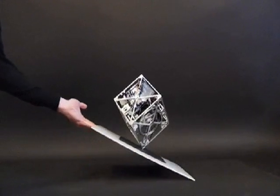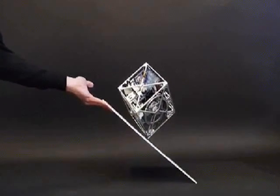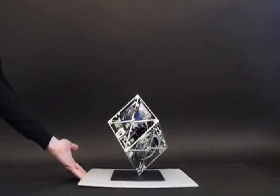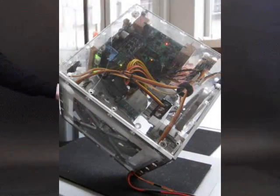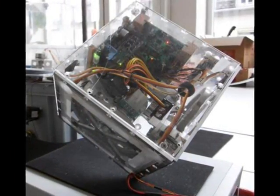Researchers have developed a robot cube that can walk, jump, and balance itself on a corner.